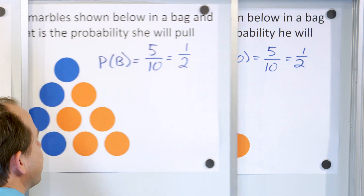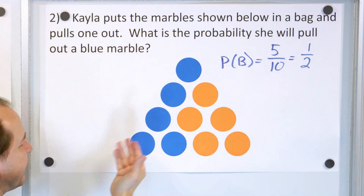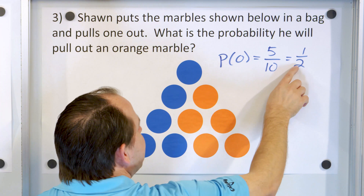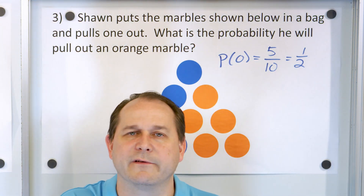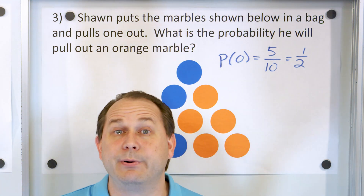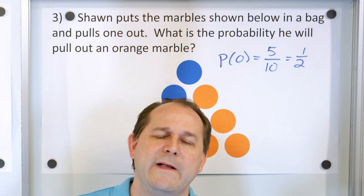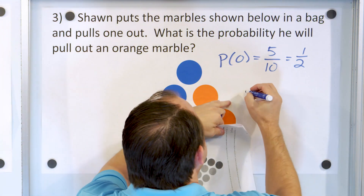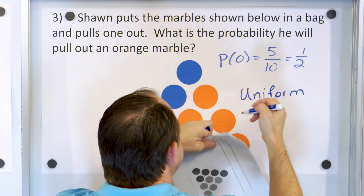So in this situation, the probability of pulling a blue marble is one-half — half of the time I expect to pull blue. Also, half of the time I expect to pull an orange marble. Since both possible outcomes have exactly the same probability of one-half, this is also a uniform probability model.